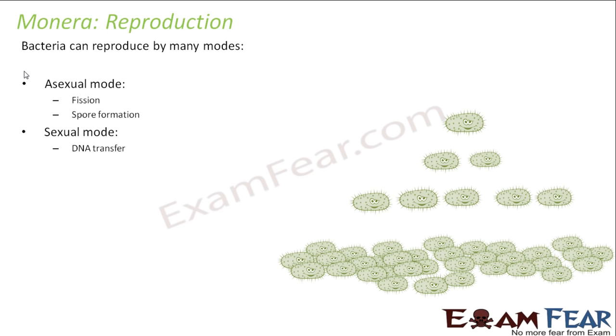When I talk about asexual reproduction, they can reproduce by fission or by spore formation. We have discussed about reproduction in one of our lessons in class 10, where I have told you about the different types of asexual reproduction and sexual reproduction.